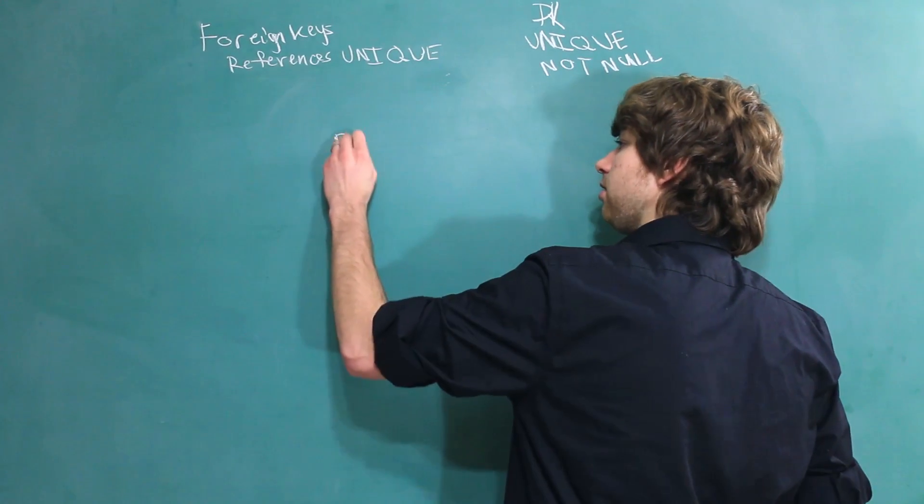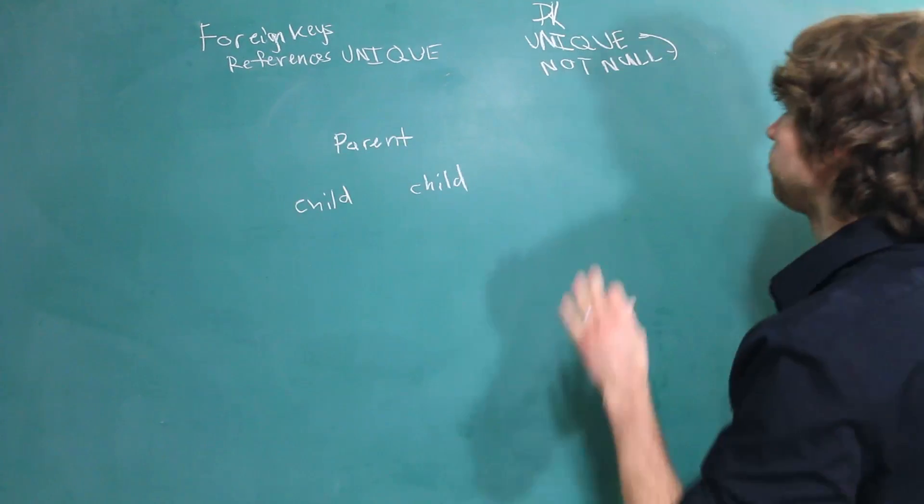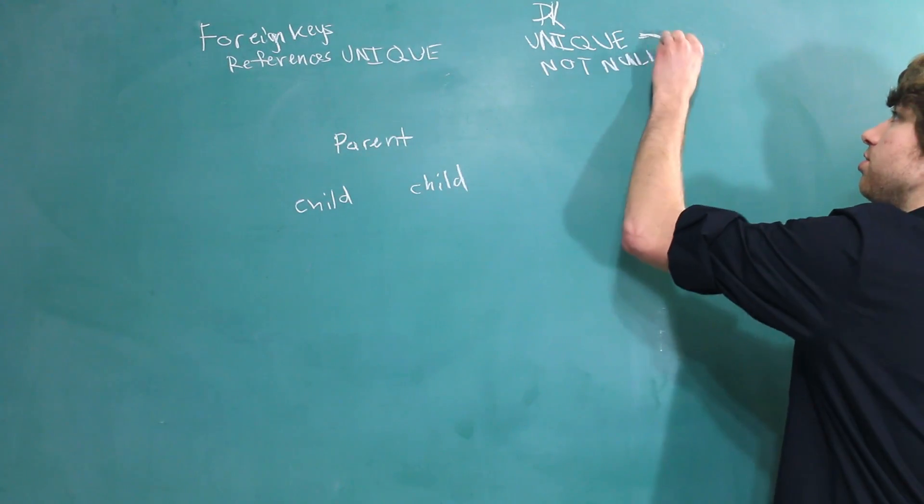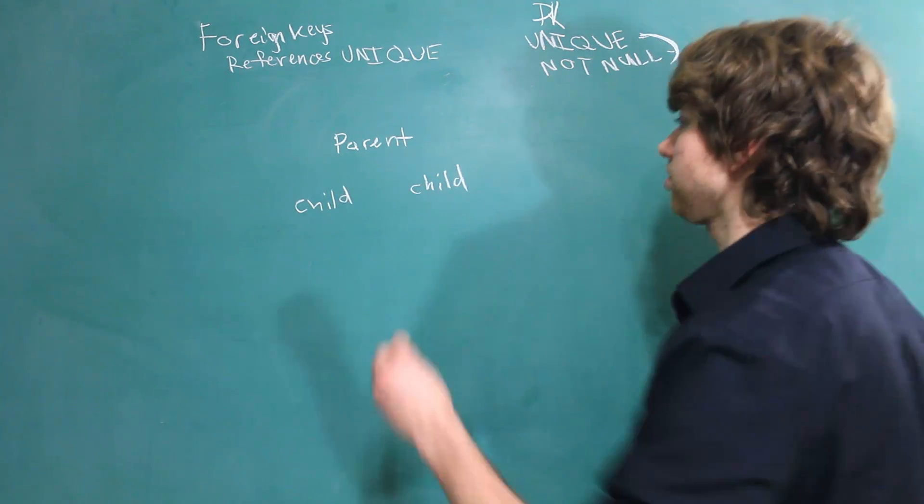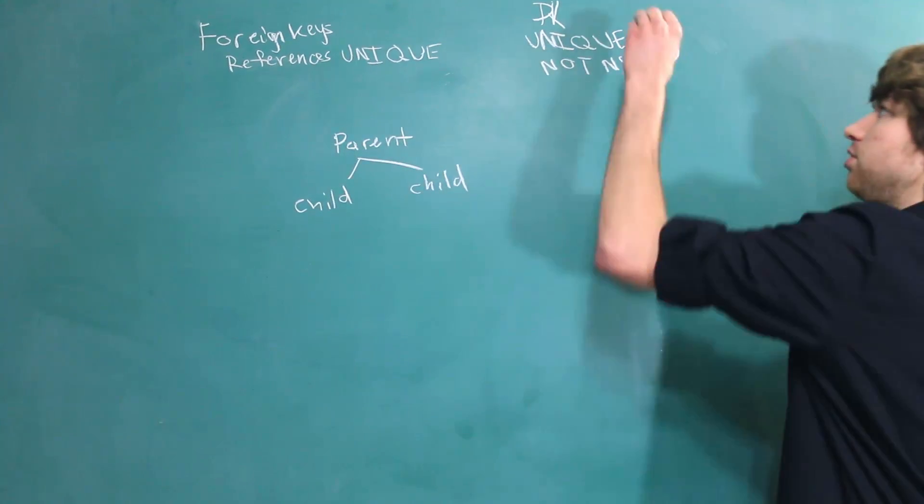So, we're just going to write parent, and then two children. Now, we need to ask ourselves, what is the unique and not null constraints going to do to these rows? So, first, let's draw these out. The first one, unique.